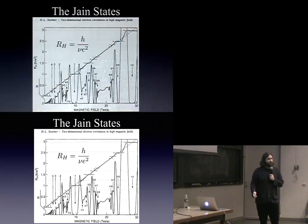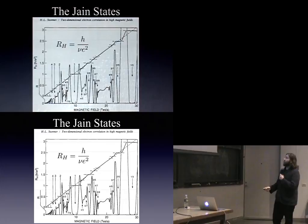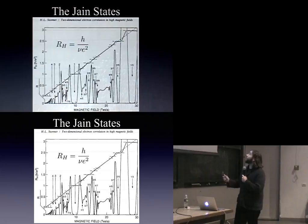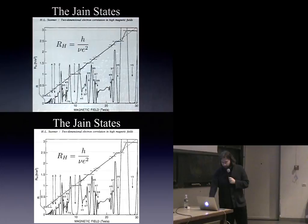You'll notice that some of these plateaus are very wide, some are not so wide. Every time there's one of these plateaus, you also find that this other curve below — which you can think of as basically the normal conductance — dips to zero. So when it dips to zero, we think of that system as being an insulator. It does not conduct electricity in the normal way that a metal does.